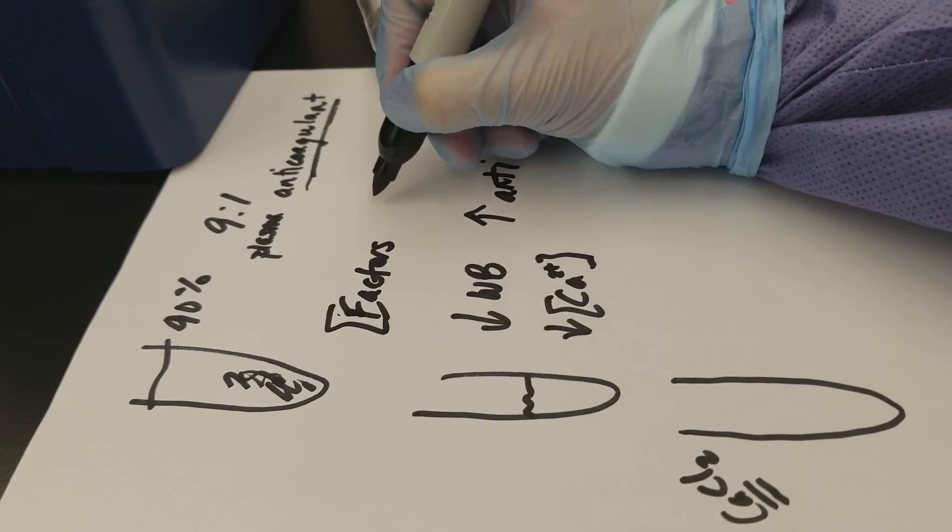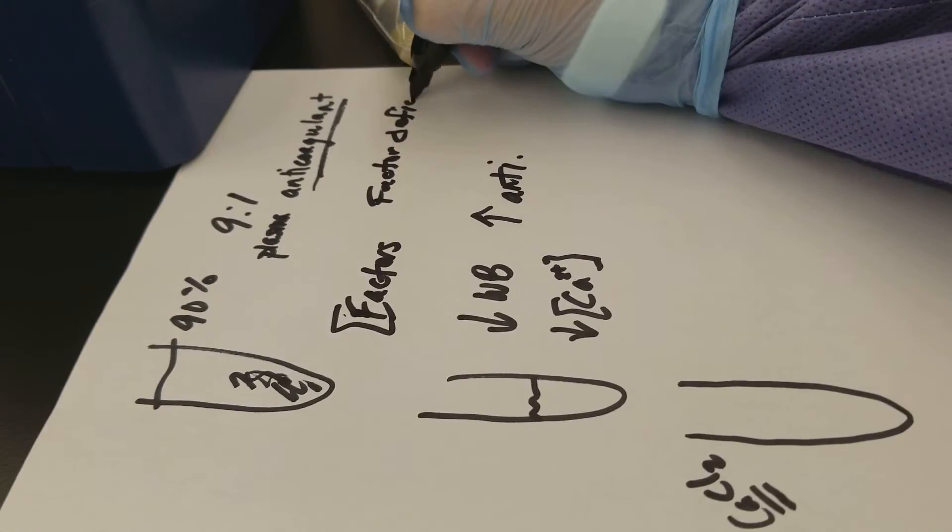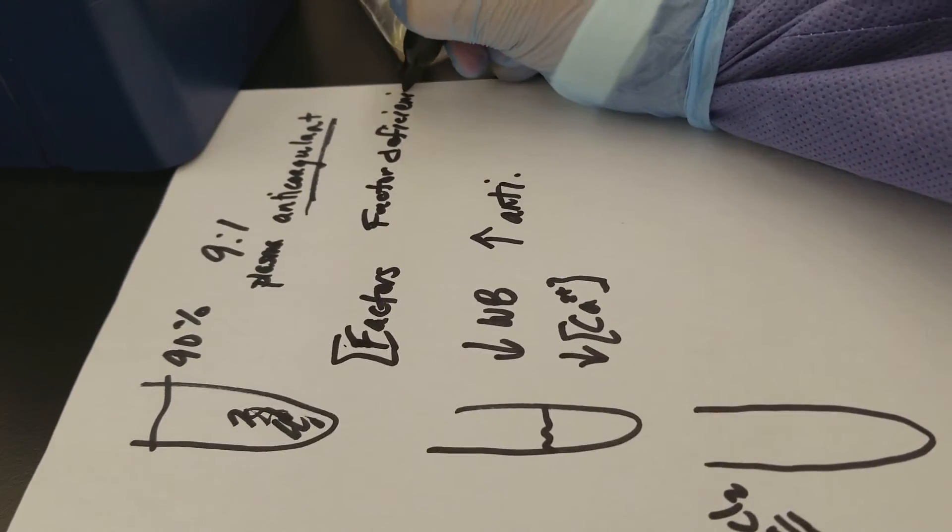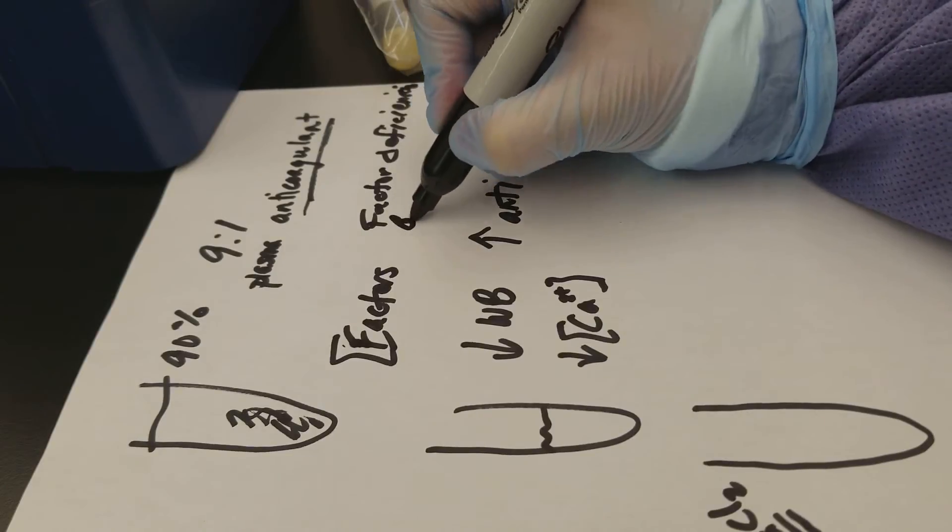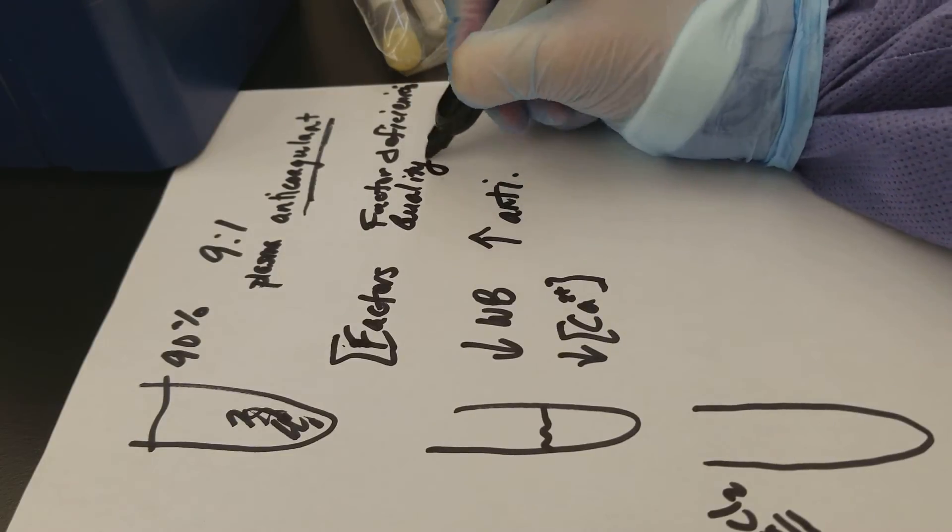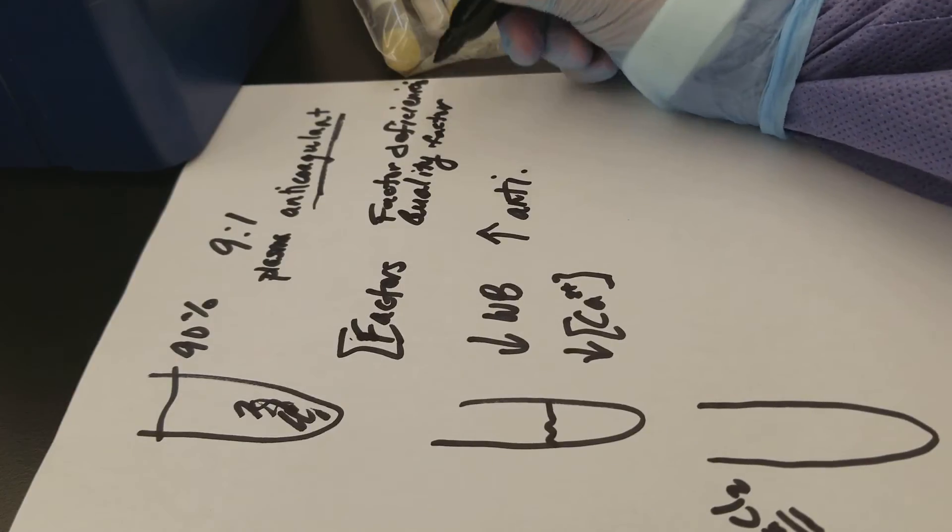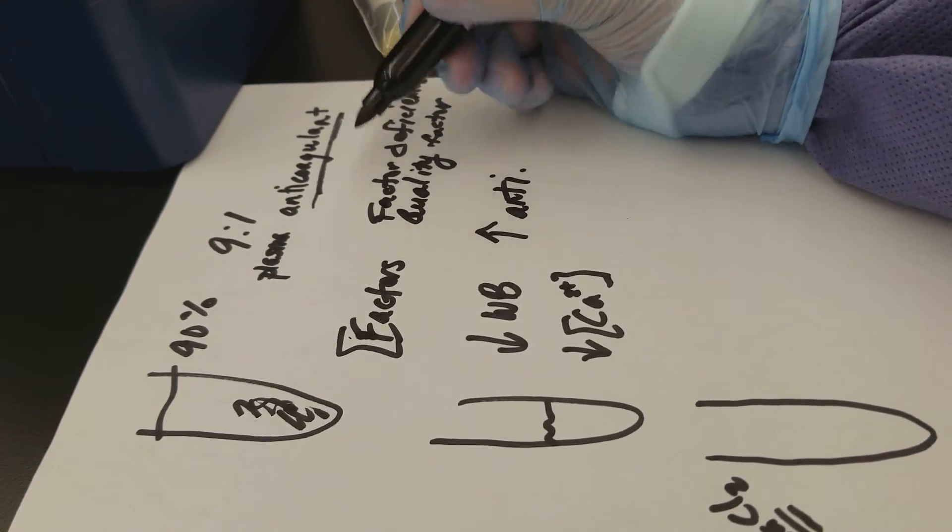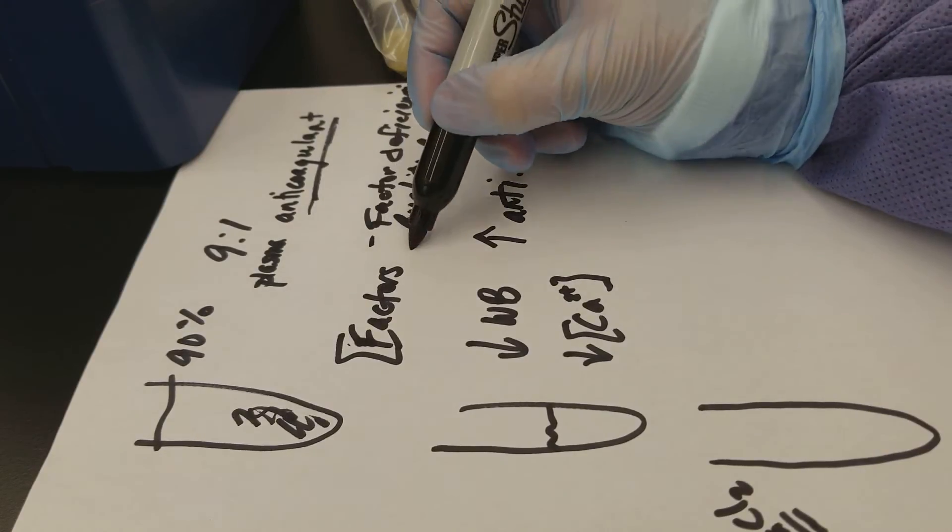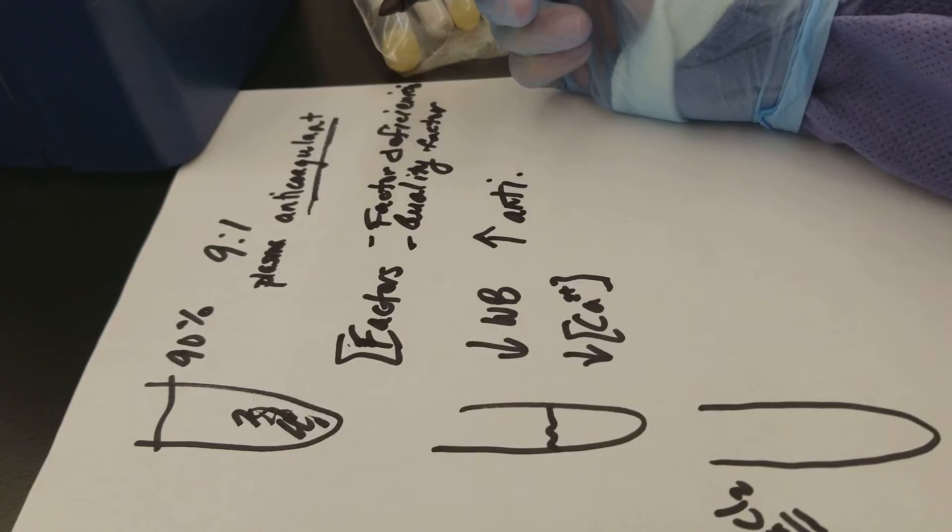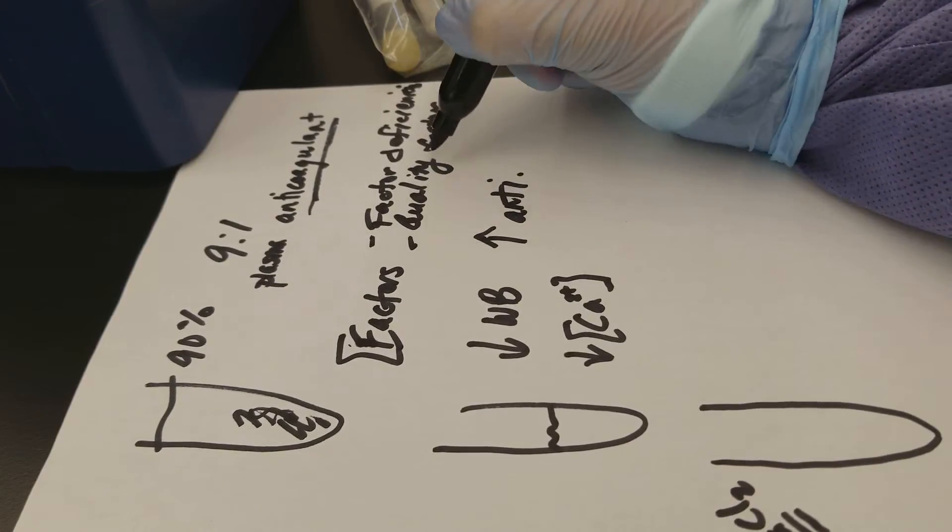And that therefore also indicates the concentration of the factors that we have in our blood. So we can see, are there factor deficiencies? Is there something maybe wrong with the quality of the factors that we have? Maybe we don't actually have a factor deficiency or a platelet deficiency. Maybe we actually just have a problem with the way that they're made, mainly if you're thinking about qualitative disorders.